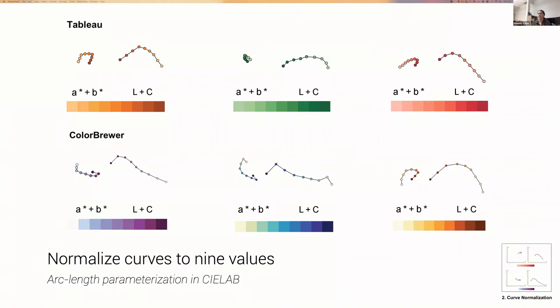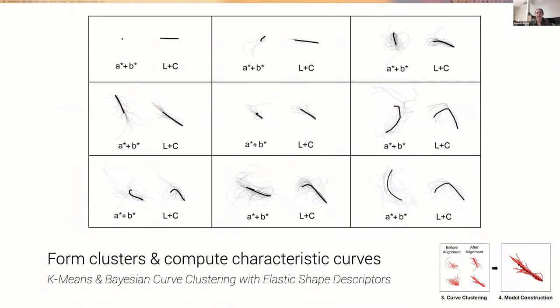We fit interpolating B-splines to the control points and used arc length interpolation to resample the curves to a uniform number of points. Once we normalized these curves, we clustered them according to their physical structures. We align these curves by moving, rotating, and reflecting them, and then use either k-means clustering or Bayesian clustering to group curves that share similar structures. Once we've done this grouping, we compute a characteristic curve describing the mean ramp structure of each cluster.